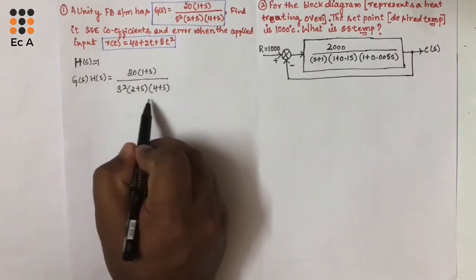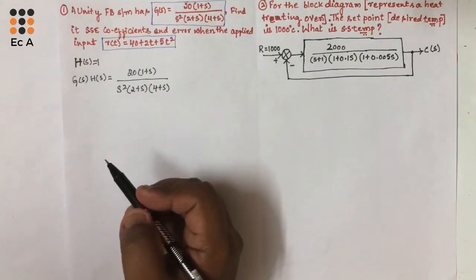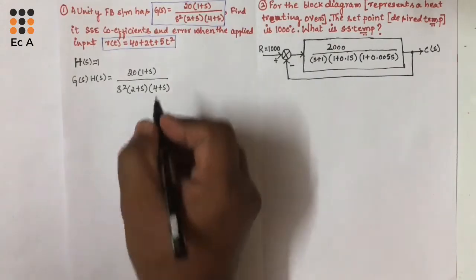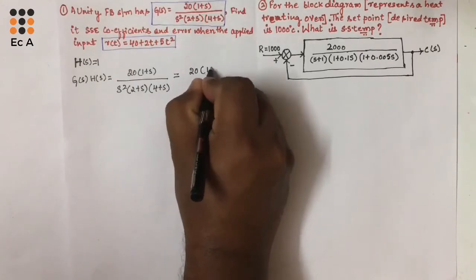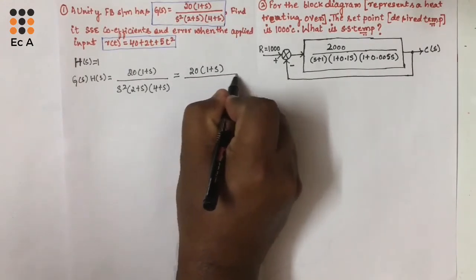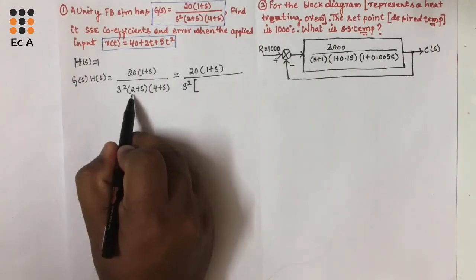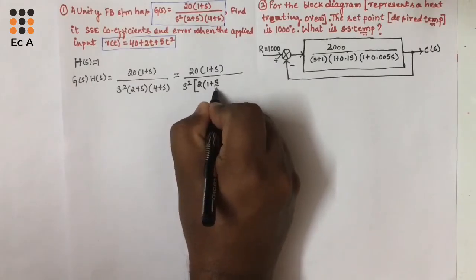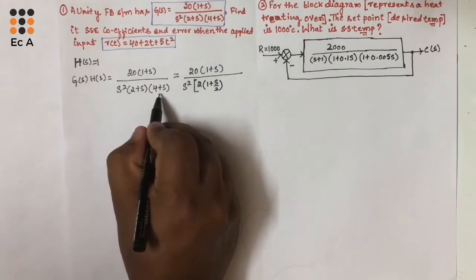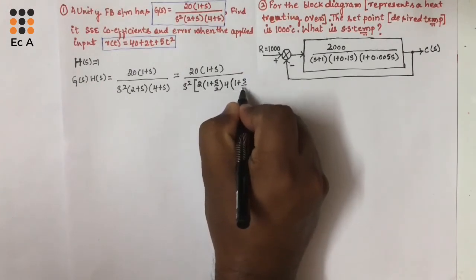Now, the given equation is not a standard equation. Let us convert this equation into a standard equation, then we will find the steady state error coefficients. We write the numerator as 20 times (1 plus S), and in the denominator we keep S squared. For the term (2 plus S), we take 2 as common to get (1 plus S/2), and for the term (4 plus S), we take 4 as common to get (1 plus S/4).